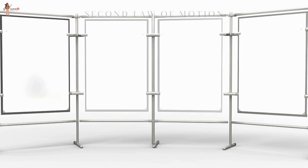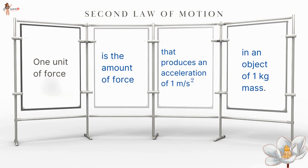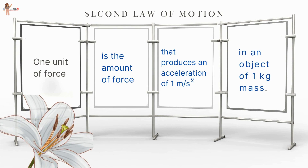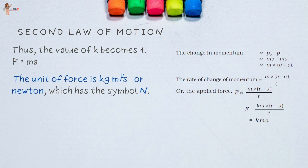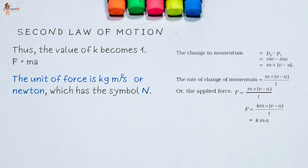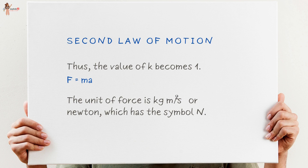For k = 1, F = ma. One unit of force is defined as the amount of force that produces an acceleration of 1 meter per second squared in an object of 1 kilogram mass. The unit of force is kilogram meter per second squared, or newton, with the symbol N. The Second Law of Motion gives us a method to measure the force acting on an object as a product of its mass and acceleration.